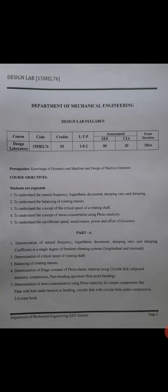In Part A: first, determination of natural frequency, log decrement, damping ratio, and coefficient of damping in a single degree of freedom system. Second, determination of critical speed of a rotating shaft. Third, balancing of rotating masses. Fourth, determination of fringe constant of photoelastic material using a circular disc subject to diametric compression and pure bending specimen. Fifth, determination of stress concentration using photoelasticity for simple components like a plate with a hole under tension or bending, and a circular disc with a circular hole under compression.